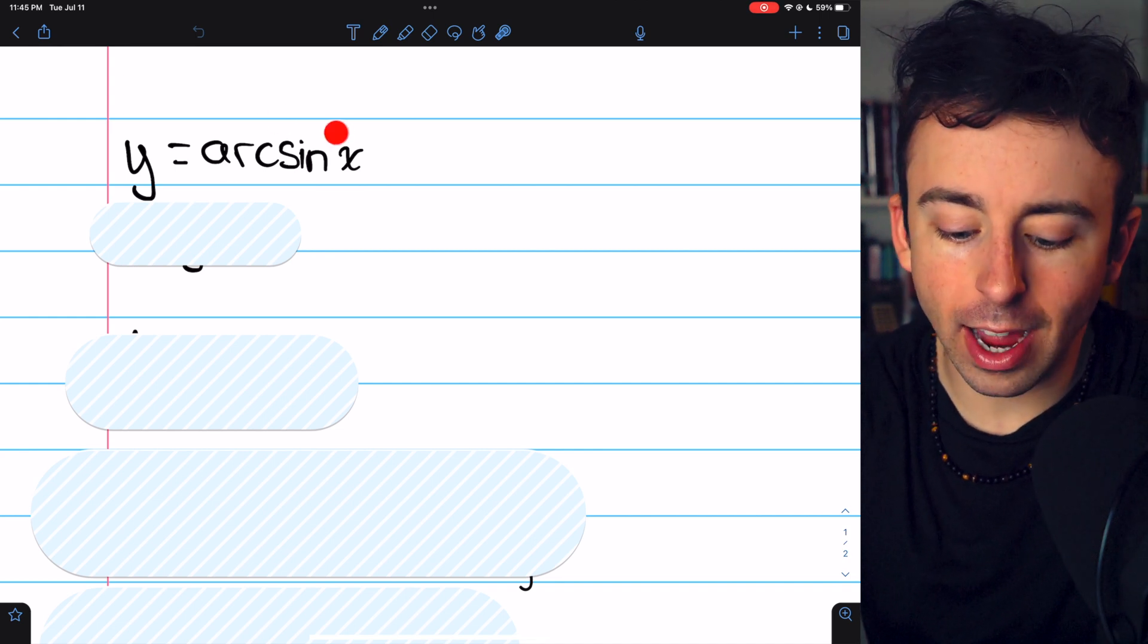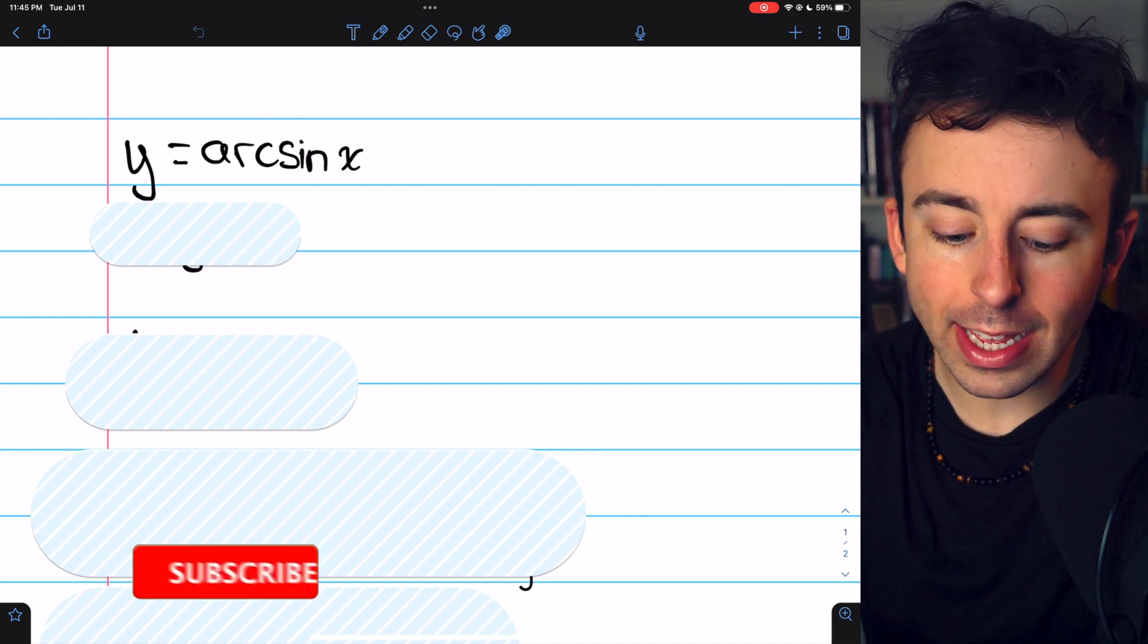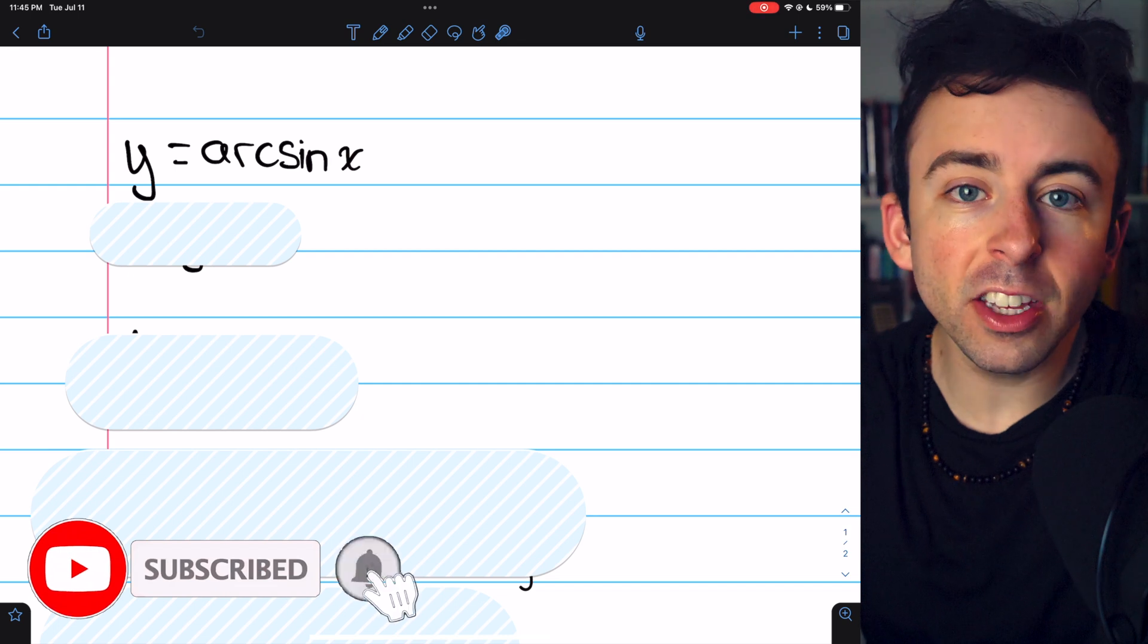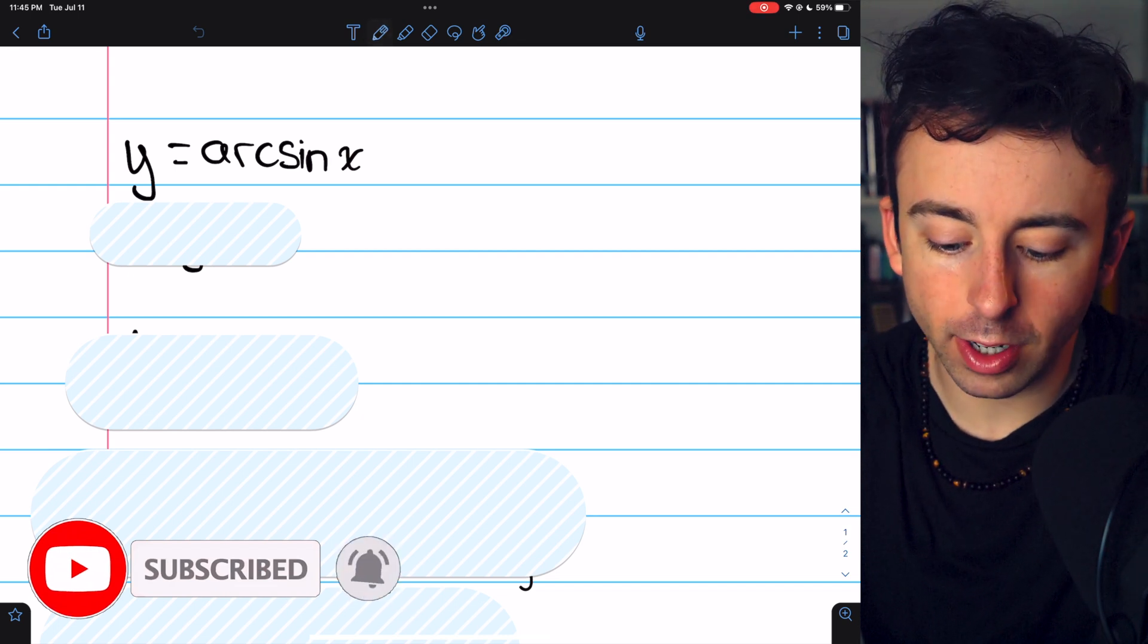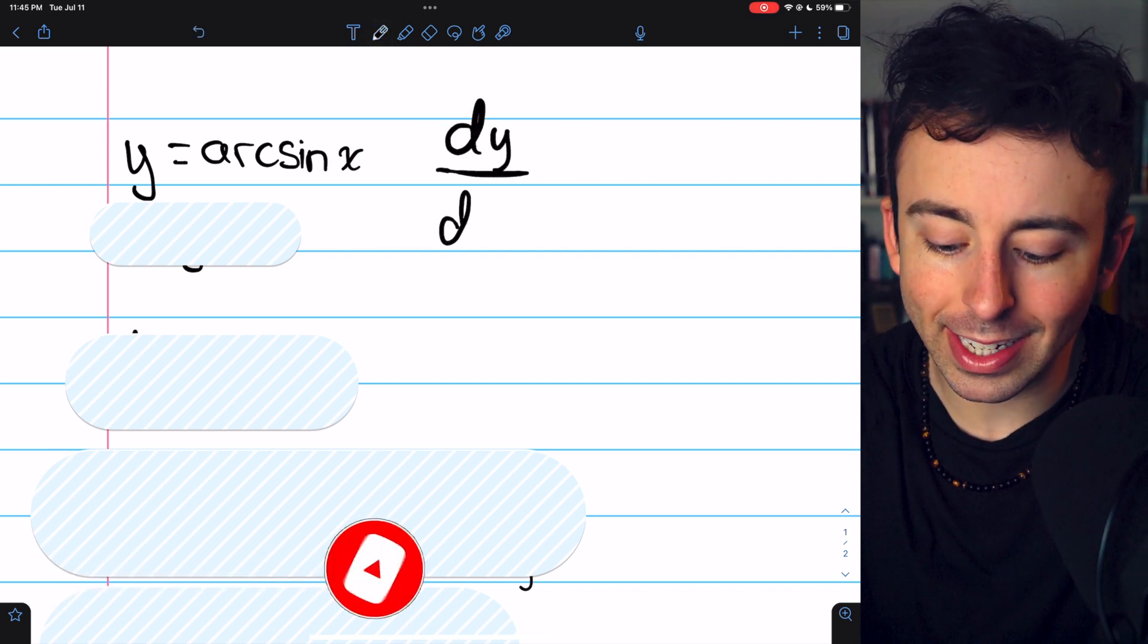To find the derivative of arcsin(x), we'll say that y equals arcsin(x), then use implicit differentiation to find dy/dx.